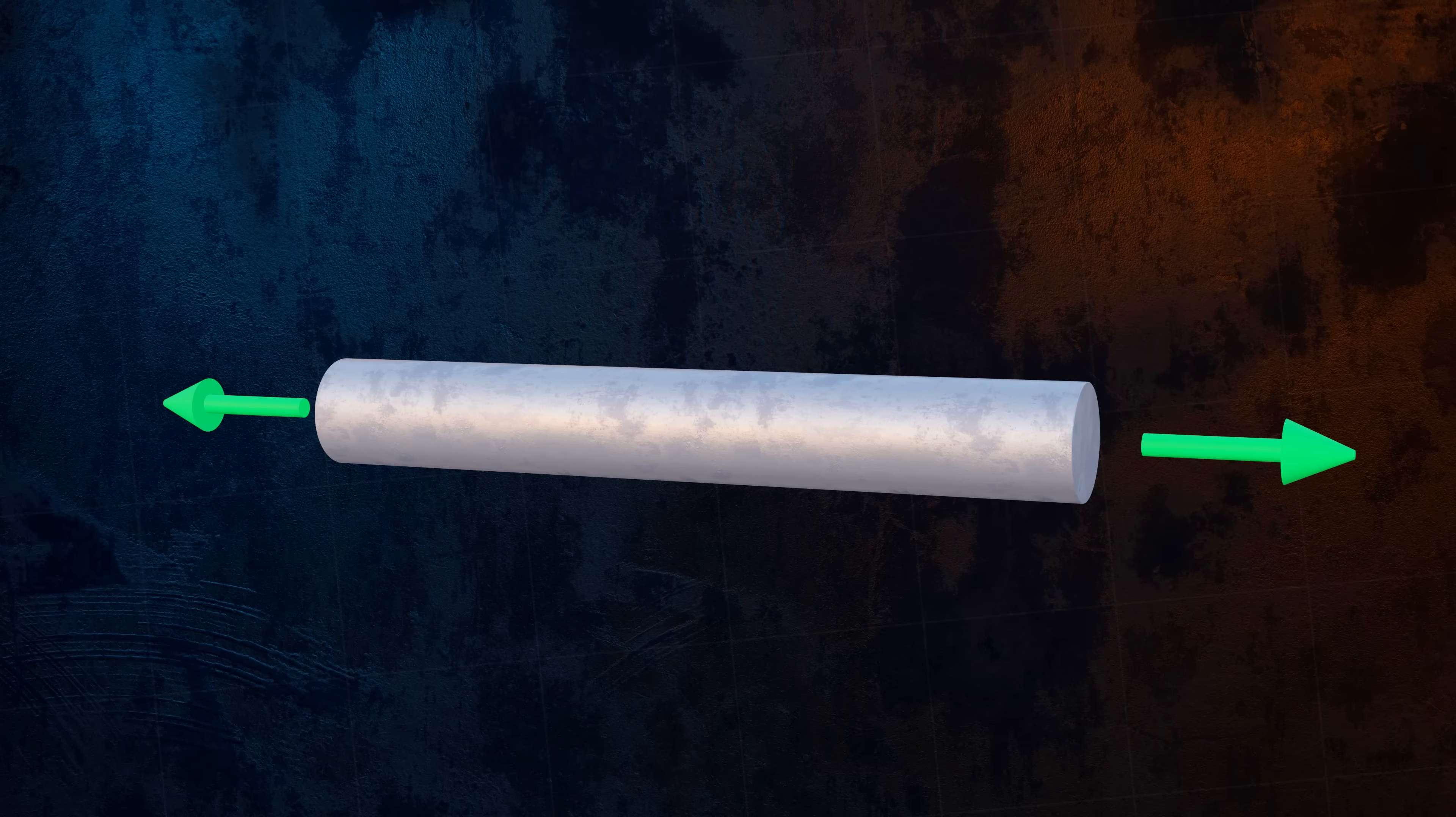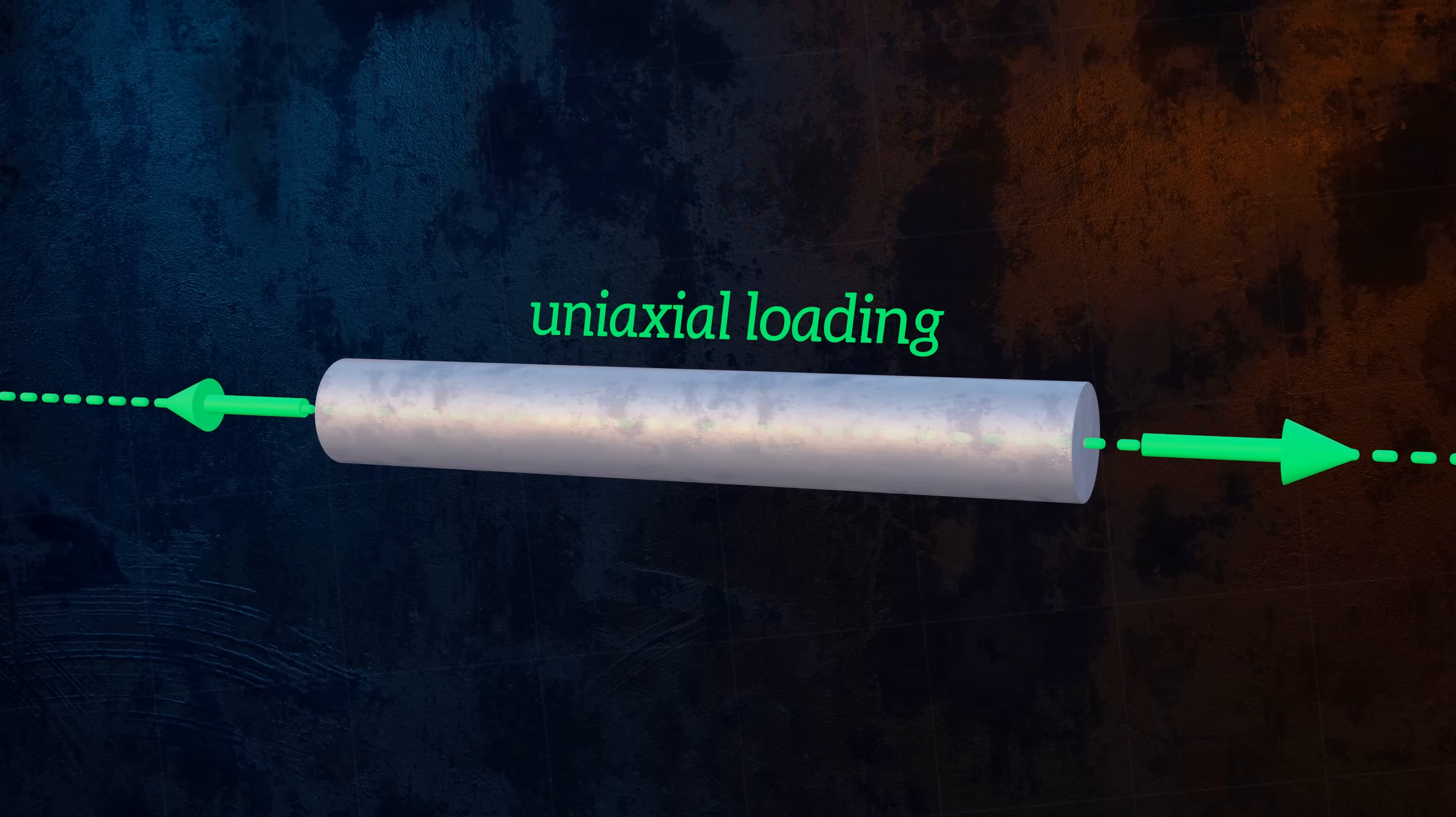Here we have a solid metal bar that is loaded by two equal but opposite forces. We refer to this as uniaxial loading, because all of the applied loads are acting along the same axis. The two forces are pulling the bar, causing it to stretch.